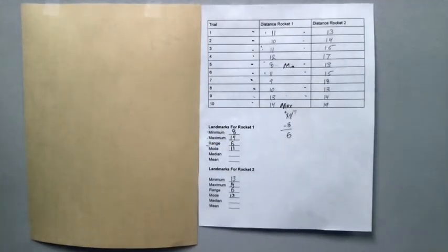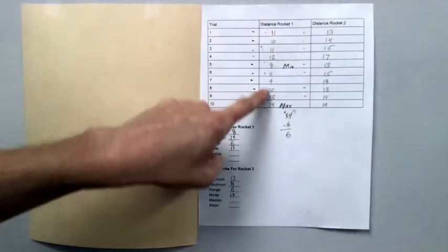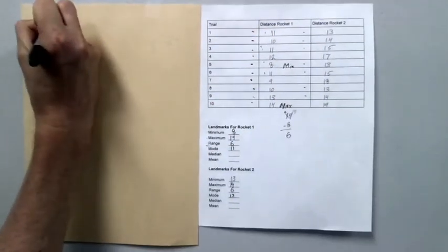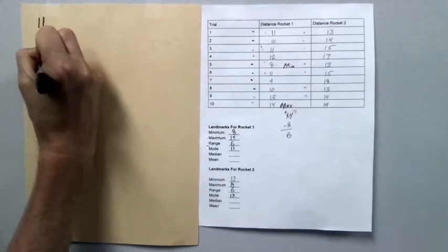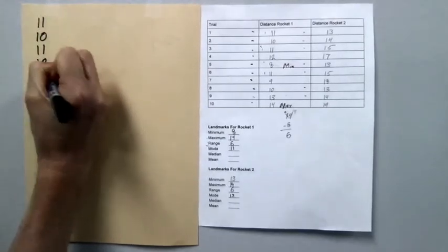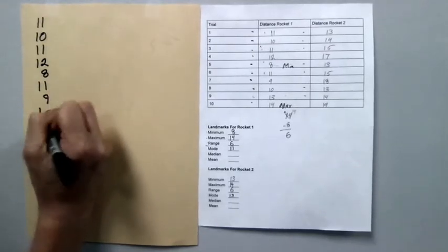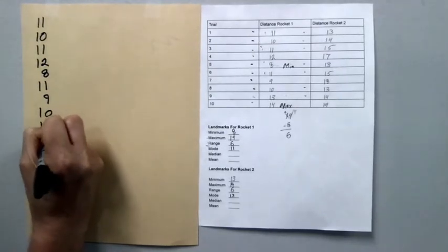So that's what I'm going to do. So I'm going to start by adding up all of my flights. 11, 10, 11, 12, 8, 11, 9, 10, 13, and 14.